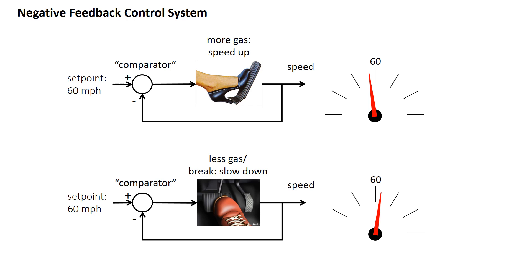A key concept in all of biology, and particularly important when we think about homeostatic systems in physiology, is negative feedback control. An example of a negative feedback control that might be familiar to you is what you're doing when you're driving a car and trying to maintain a constant speed.